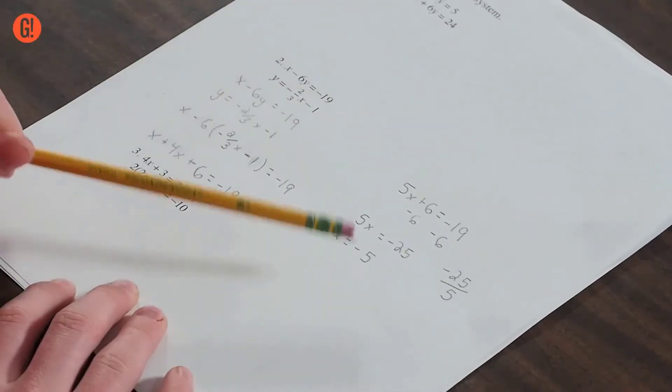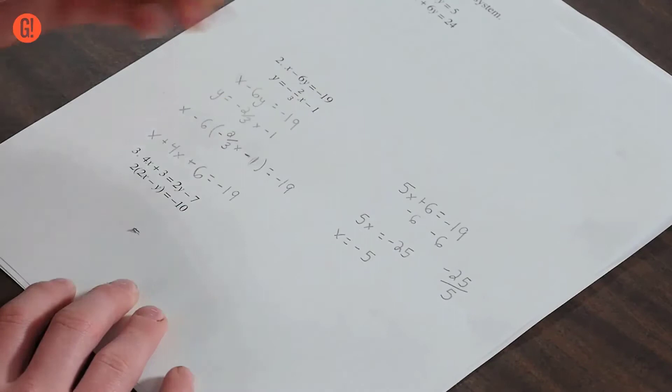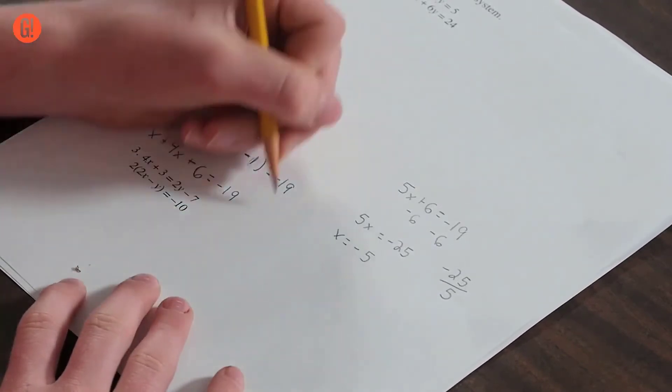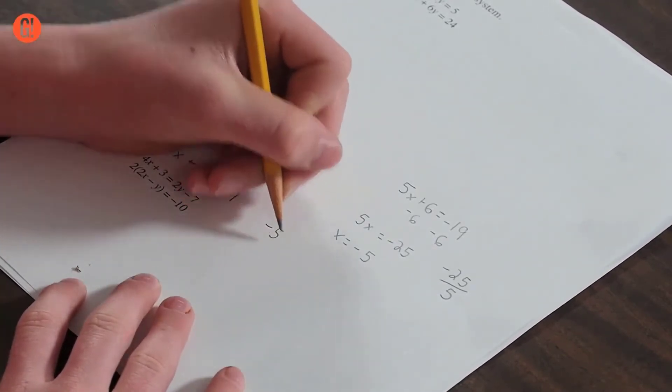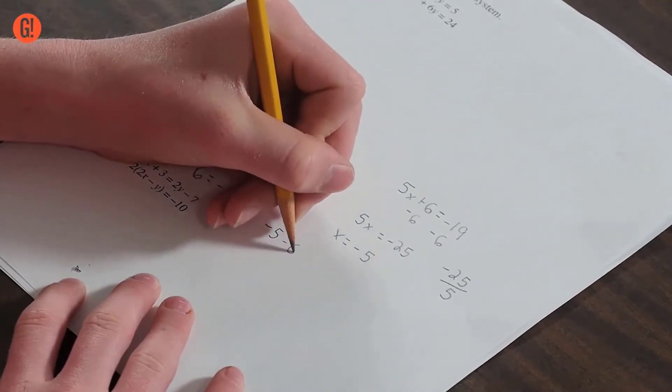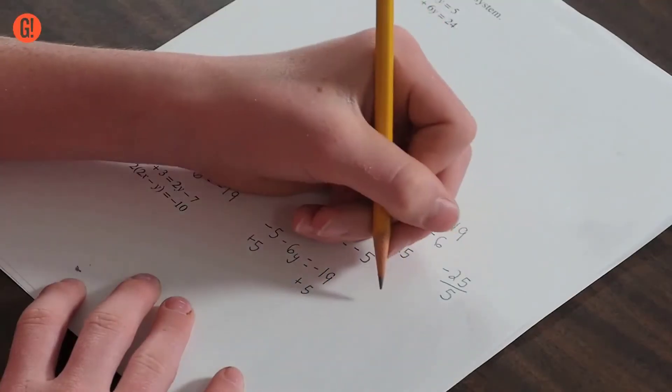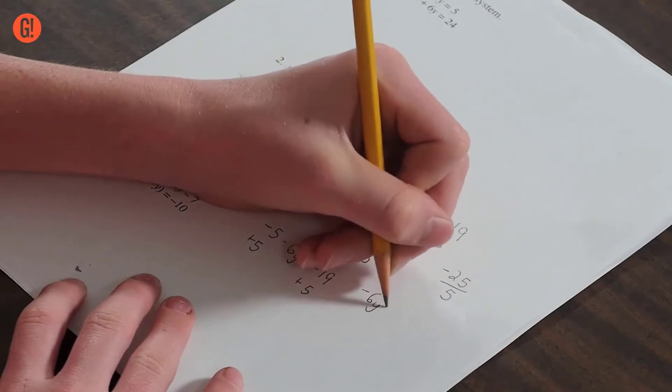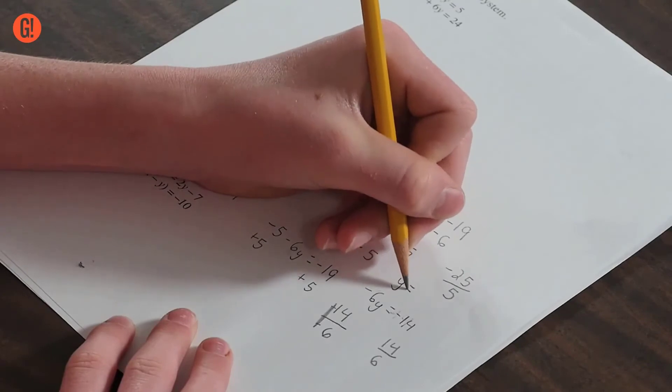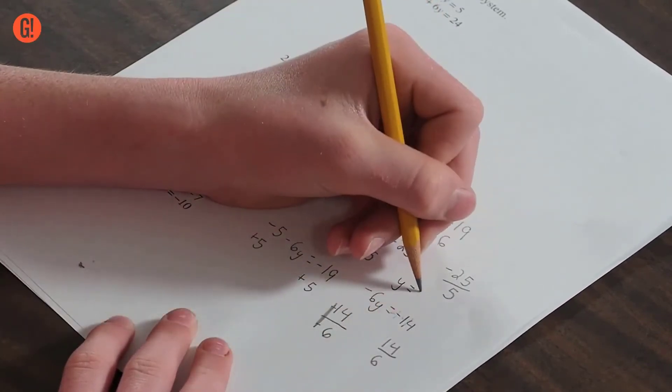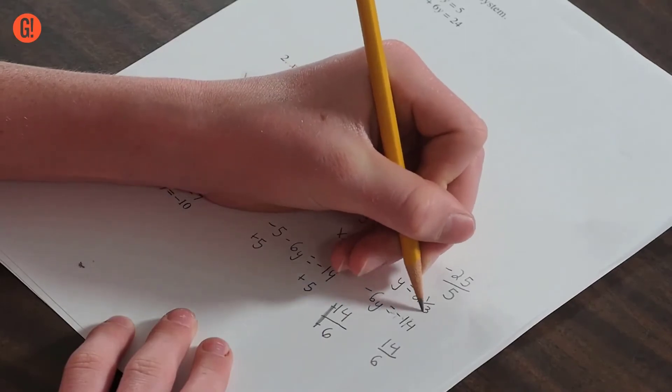Now that he has the solution for x, he can solve for y. When I have this, I would substitute it back into the equation. I'm going to use the first equation because it's simpler. So it's negative 5 minus 6y equals negative 19. I'm going to add 5 to both sides. I get negative 6y equals negative 14, so y equals 2 and 1 third.